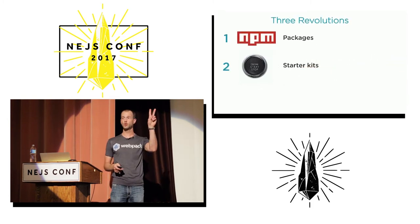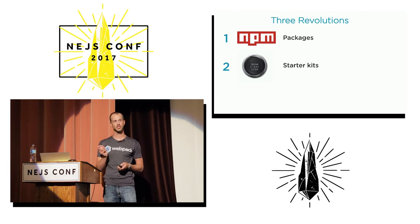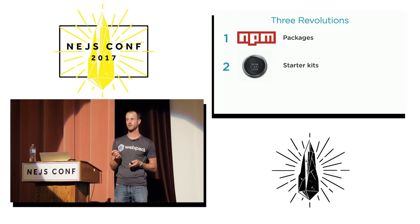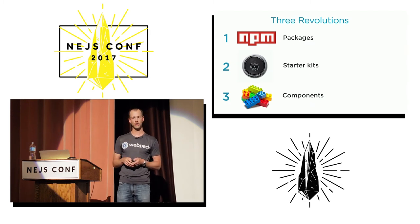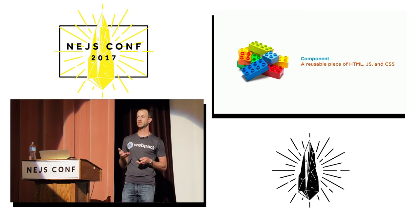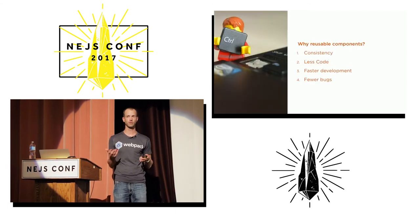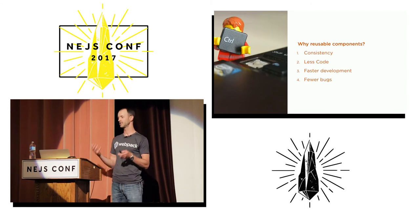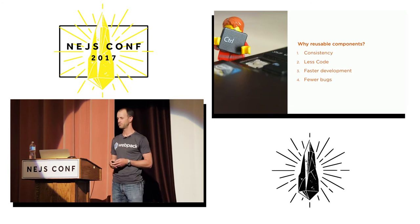We've talked about two of the three reusable revolutions: packages and starter kits. I'm going to close out with the final revolution — reusable components. All of these build upon one another. For those not familiar, a reusable component is a reusable piece of HTML, JavaScript, and CSS. We want consistency, less code, faster development, fewer bugs — the component model gives us these obvious benefits.